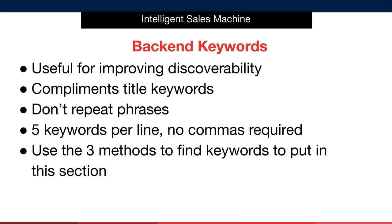Let's say that in your product listing you have the keyword 'pool rake', but in your back-end keywords you typed in the keyword 'skimmer'. Amazon recognises and matches individual words to whatever a customer types. If a customer types 'pool skimmer', Amazon will display your product because it matched the word 'skimmer' from your back-end keywords with the word 'pool' from the search.